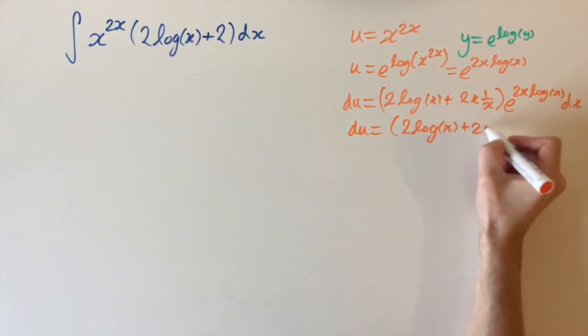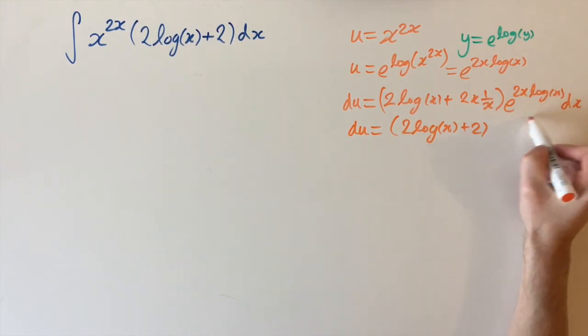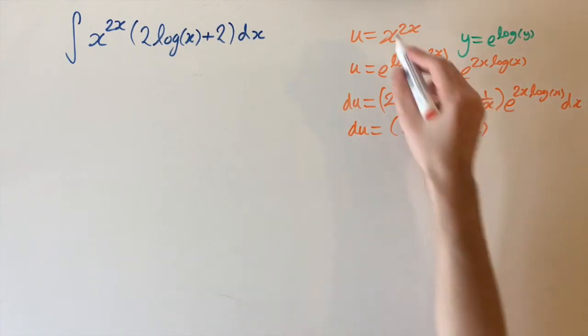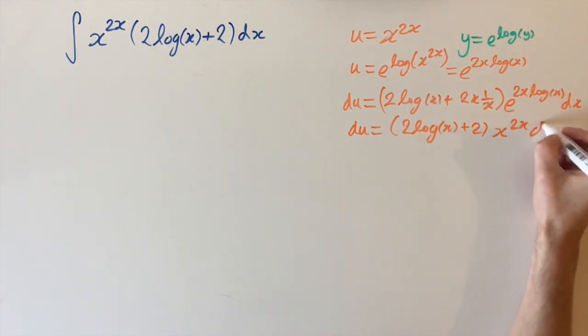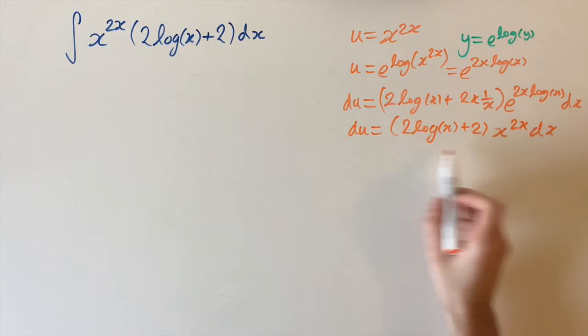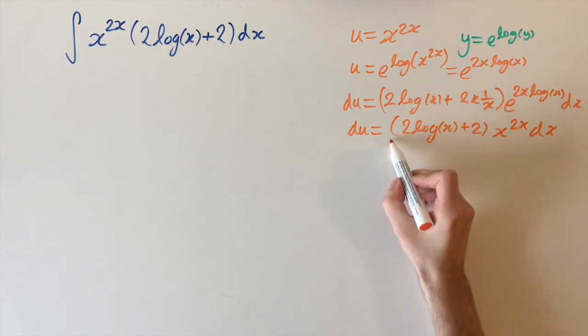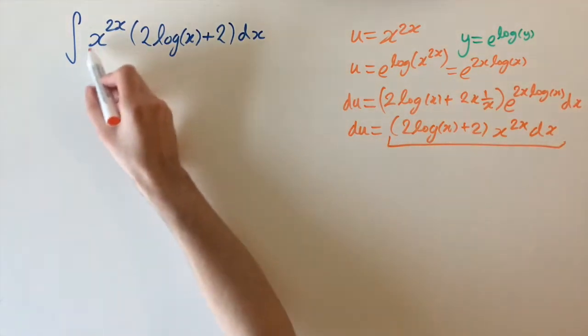So we have 2 log x plus 2, and since this is the same function we started with, I'll replace this with the original form: x power of 2x dx. Now we can see why we did this—this whole expression is exactly what we have under the integral.